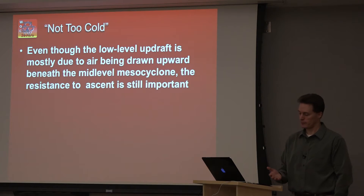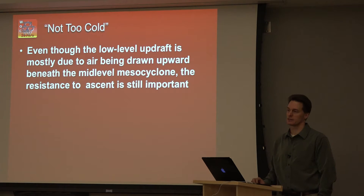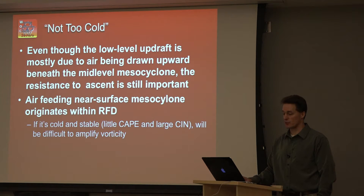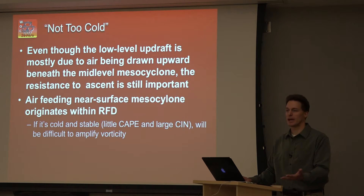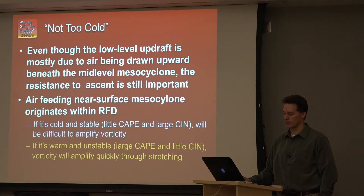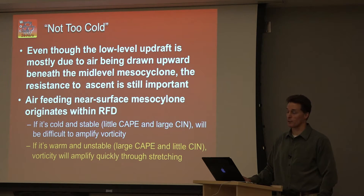What do we mean by 'not too cold'? Even if we have a low-level updraft, the air beneath it still can't be resistant to stretching. The air coming from the rear flank downdraft — if it's cold and stable, doesn't have much CAPE and has a lot of convective inhibition — it's going to be hard to amplify that vorticity. Think of molasses: trying to draw molasses upward and stretch it just won't work. What you want is relatively warm, unstable air with not much convective inhibition. The paradox is that's the exact opposite of what most downdraft air looks like — most downdraft air is supposed to be cold and stable.